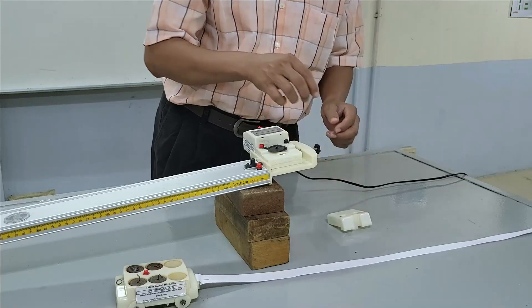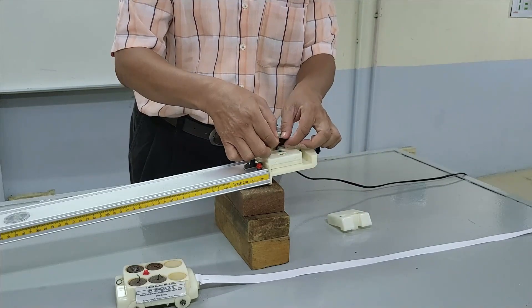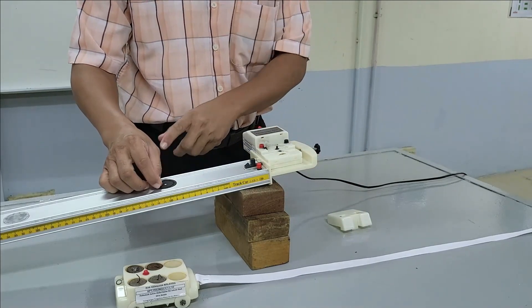Set up the trolley on the runway and make sure the ticker tape is placed at the correct position in the electric spark timer.